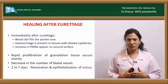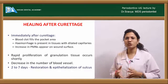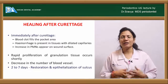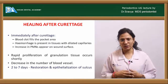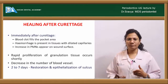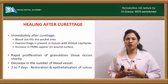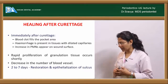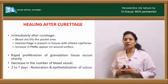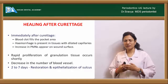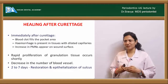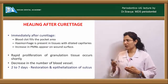After curettage, tissue healing proceeds as follows: immediately, the area fills with blood, followed by neoangiogenesis, hemorrhage, fibrin formation, and increased migration of polymorphonuclear neutrophils. This is followed by rapid proliferation and formation of granulation tissue, which gradually decreases over time. By approximately 2 to 7 days, the entire epithelium is restored.